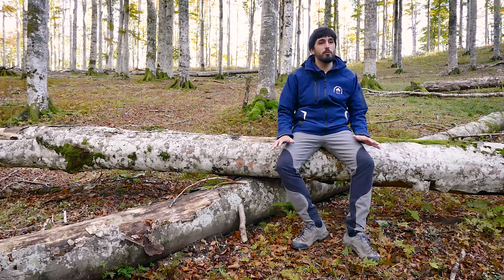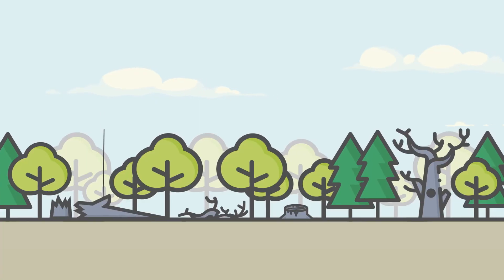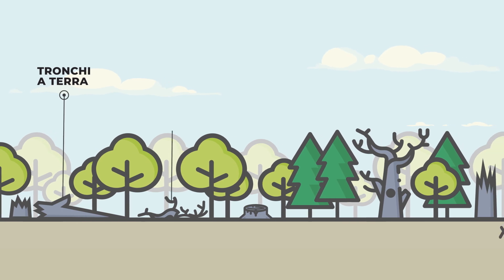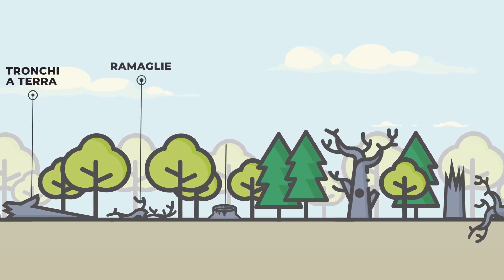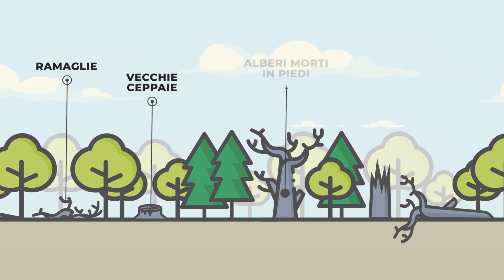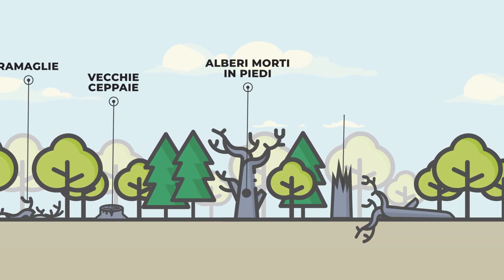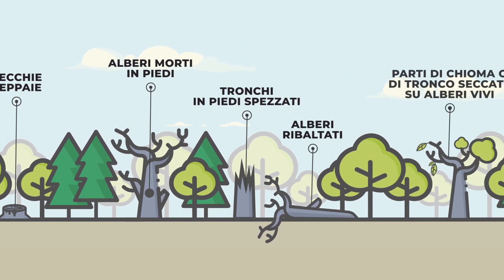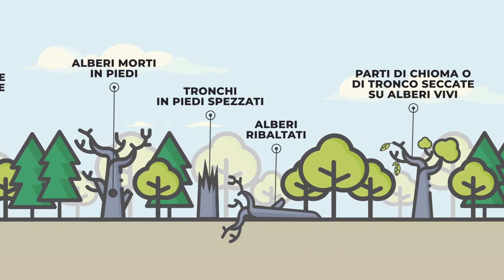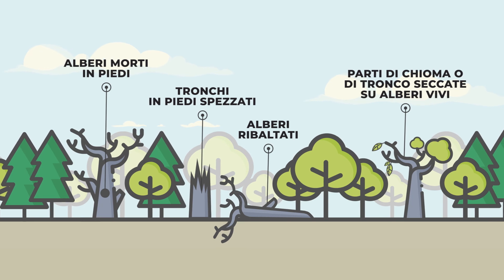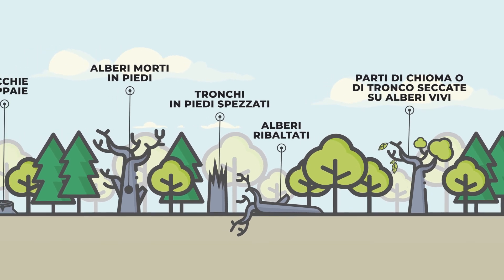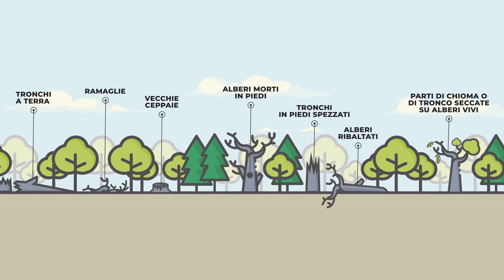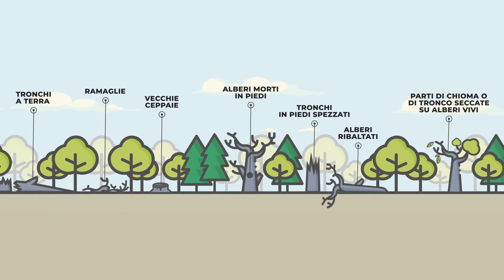Il legno morto può assumere tantissime forme: tronchi a terra come questi, ramaglia, vecchie ceppaie, alberi morti in piedi, tronchi ancora in piedi ma spezzati o ribaltati, parti di chioma o di tronco seccate su alberi vivi. Tutti questi elementi costituiscono dei microhabitat adatti ad ospitare o sostenere una o più specie saproxiliche.